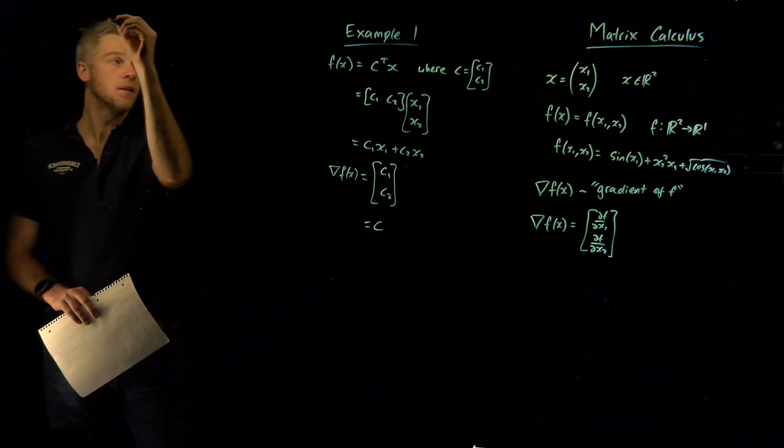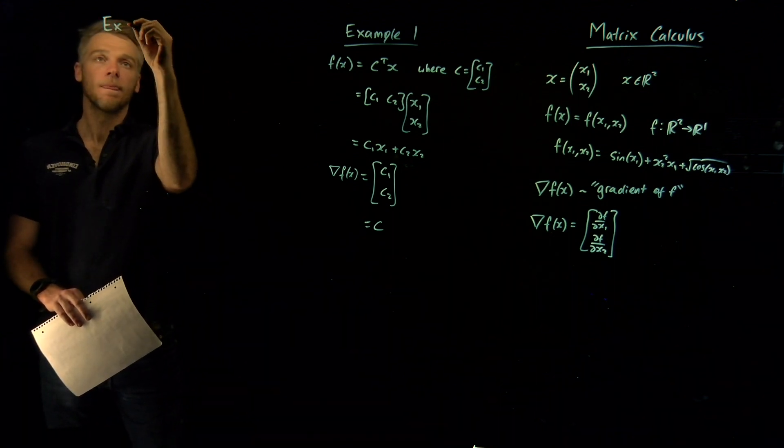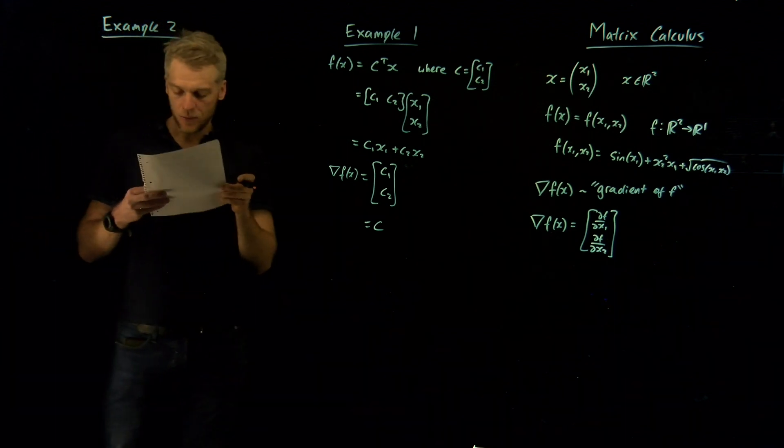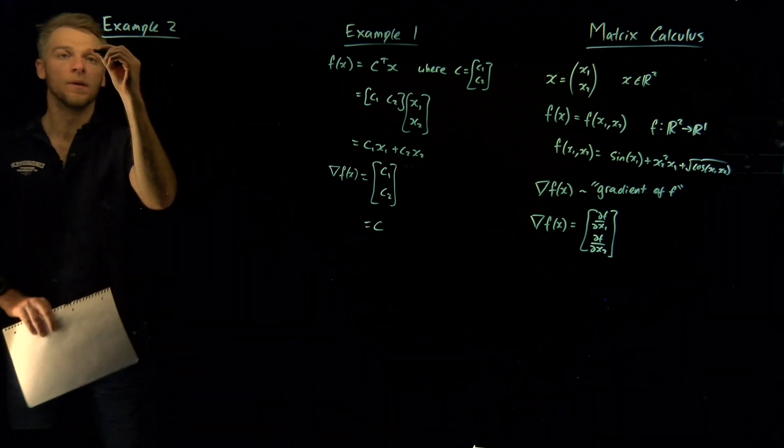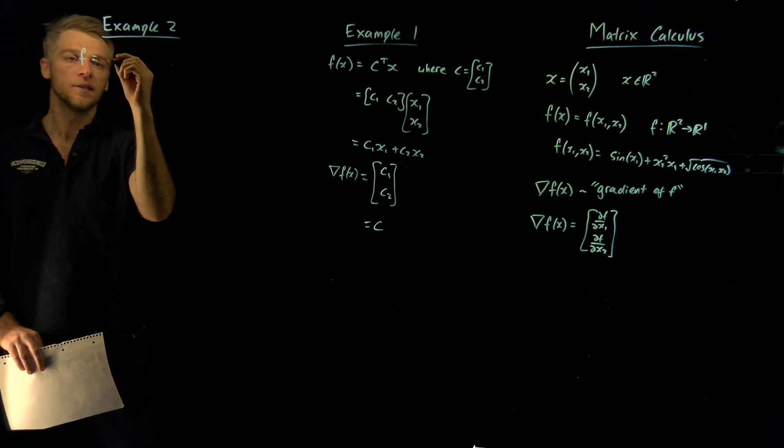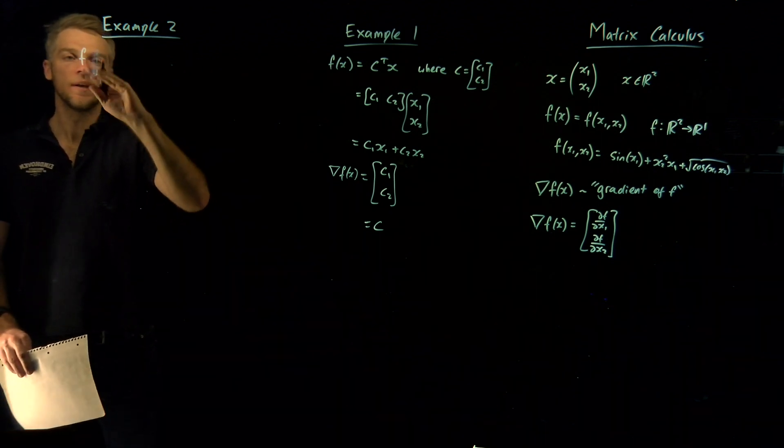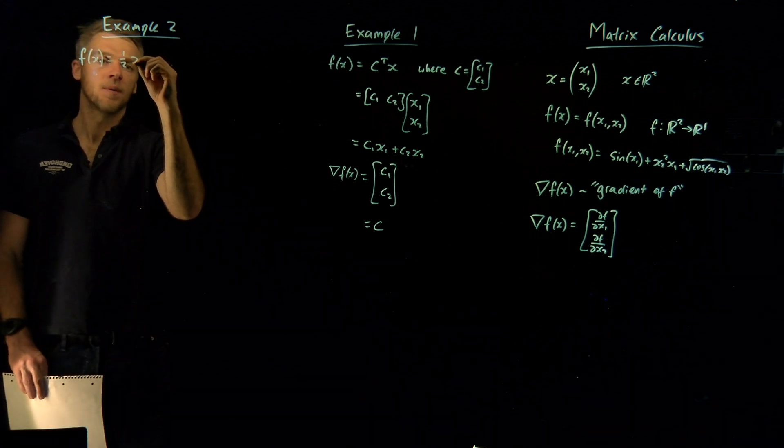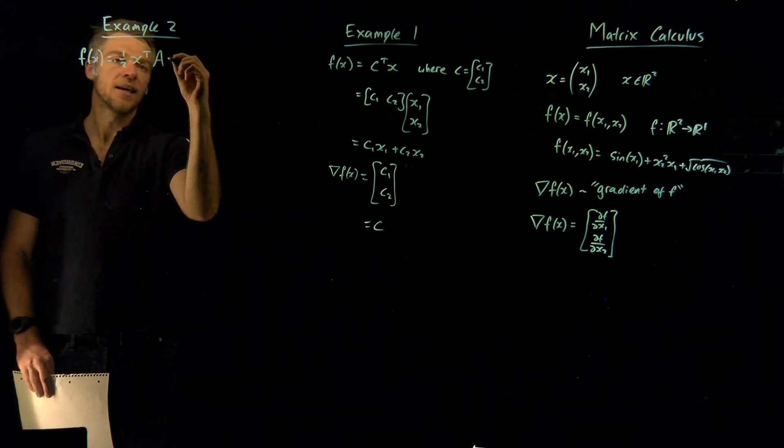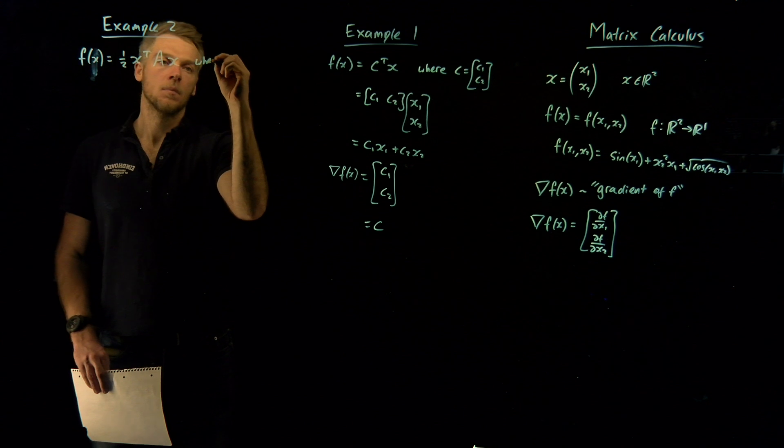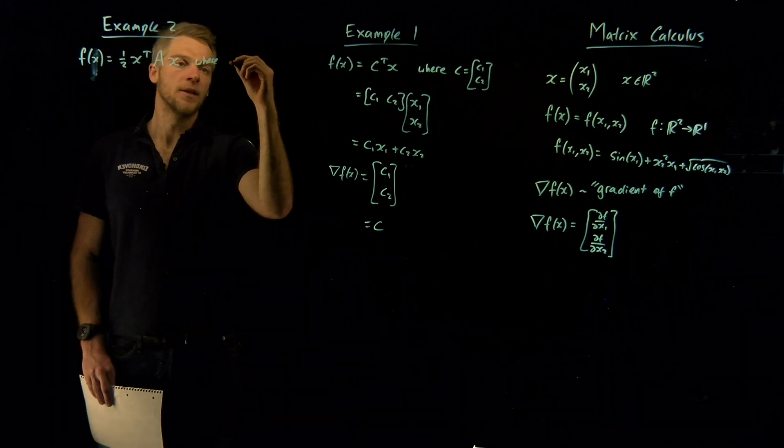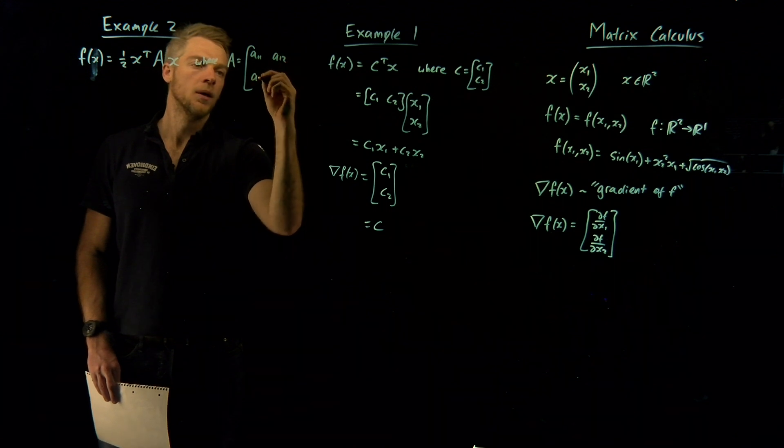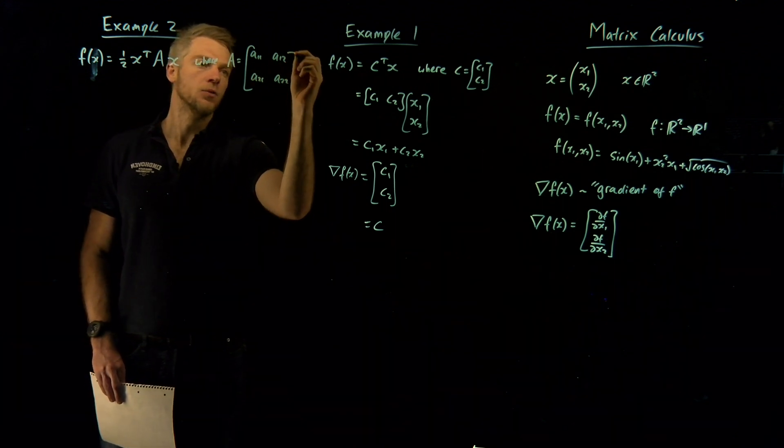So that's a useful identity. Let's cover another one. Let's do a different example. Let's make it a little bit more complicated. Let's say we've got a quadratic form. Let's say that f is equal to, I'll keep it consistent, f of x is equal to a half times by x transpose Ax, where A is some square two by two matrix. Let's call it a11, a12, a21, a22 like this.